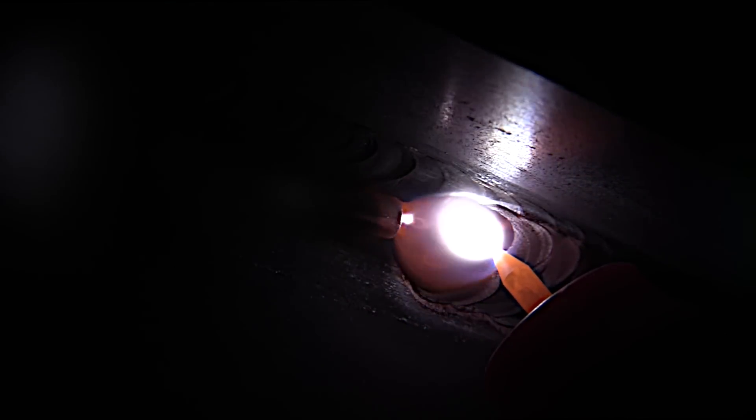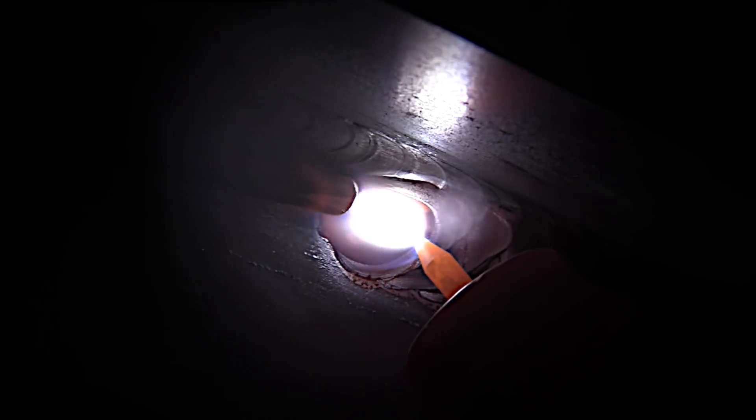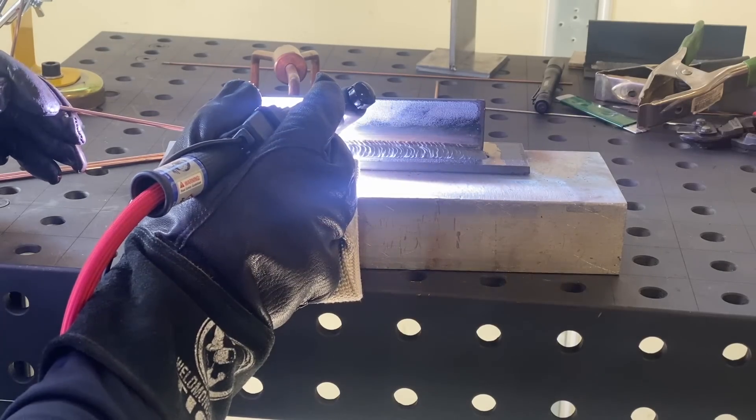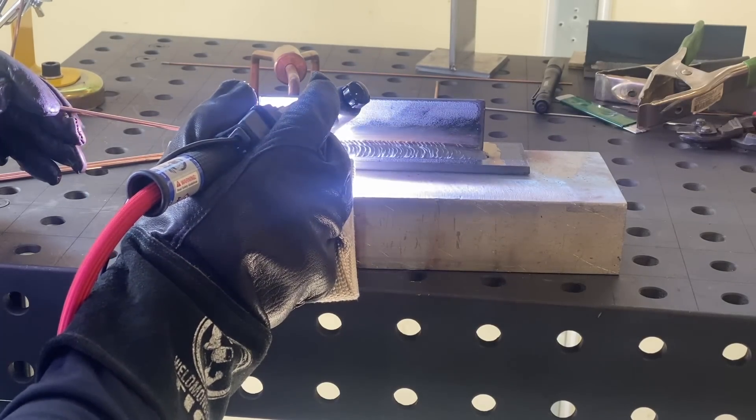A multi-pass TIG fillet weld like this would be somewhat rare to do in an actual workplace or in the field or anything. This is really more of a student exercise to prepare you for doing a multiple pass pipe joint or something like that. But it's a requirement in a lot of schools and so in order to progress and move on to the next thing and get on pipe you got to master this thing and so any student having trouble with this joint I hope this video helps.